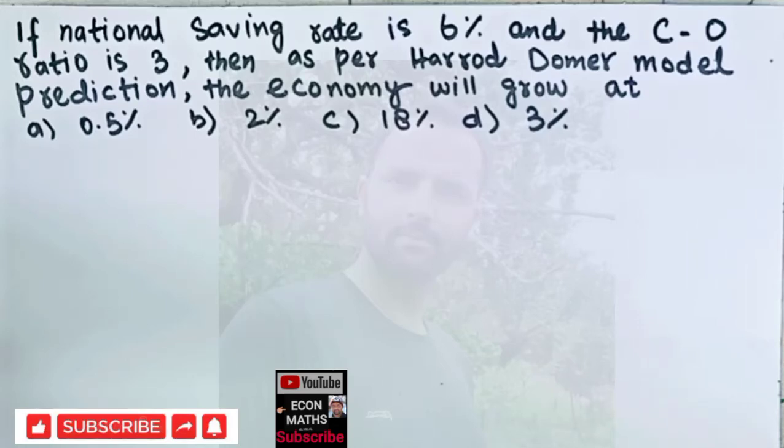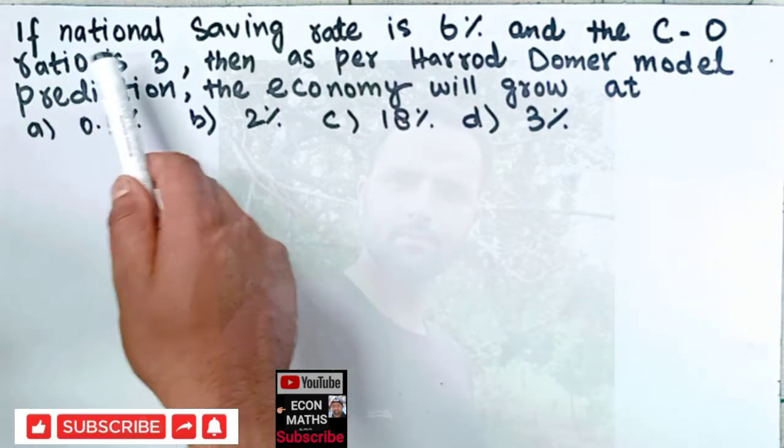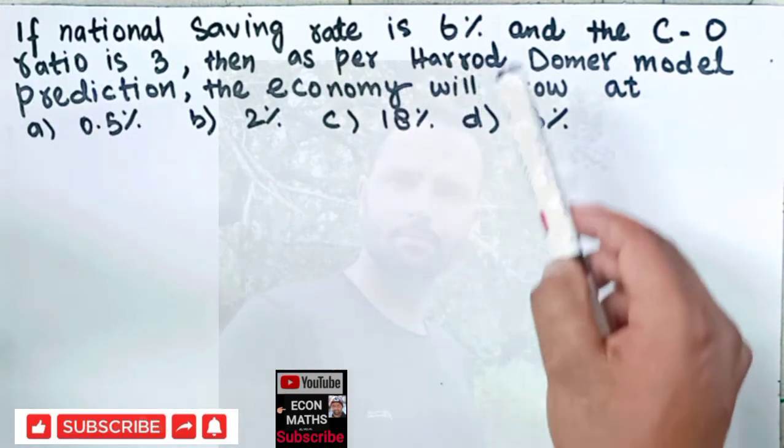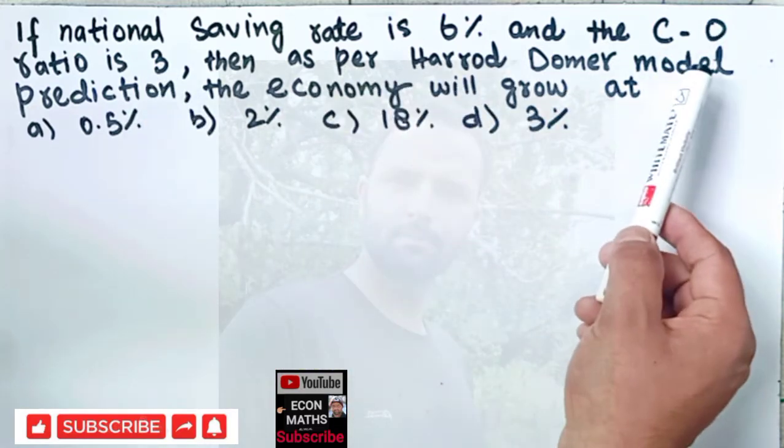In this video we will look at a numerical problem on Harrod-Domar model of economic growth. The question is: if national saving rate is 6% and capital output ratio is 3, then as per Harrod-Domar model prediction, the economy will grow at what rate?